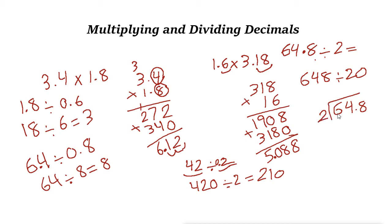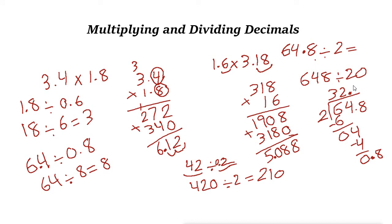Using long division: 2 goes into 6 three times, giving 6. Subtracting gives 0; bring down the 4. 2 goes into 4 twice, giving 4, remainder 0. Bring down the next digit — but we have a decimal point here, so place a decimal point in the answer. 2 goes into 8 four times: 4 times 2 is 8, remainder 0. The final answer is 32.4.